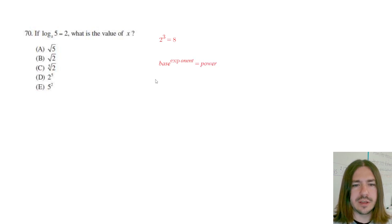In other words, to make this a little bit more straightforward, b to the exponent equals pow. Just kind of shorten this up a little bit. So the base to the exponent equals the power.